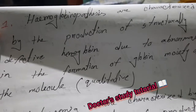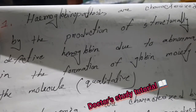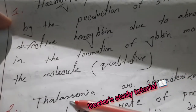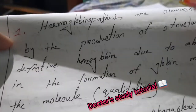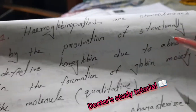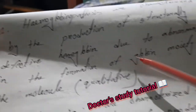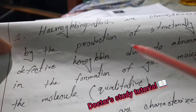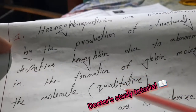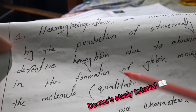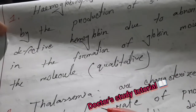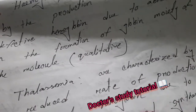An important exam question is: what is hemoglobinopathy and what is thalassemia? Hemoglobinopathies are characterized by the production of structurally defective hemoglobin due to abnormality in the formation of the globin moiety of the molecule. Hemoglobinopathy is a qualitative defect, and thalassemia is a quantitative defect.